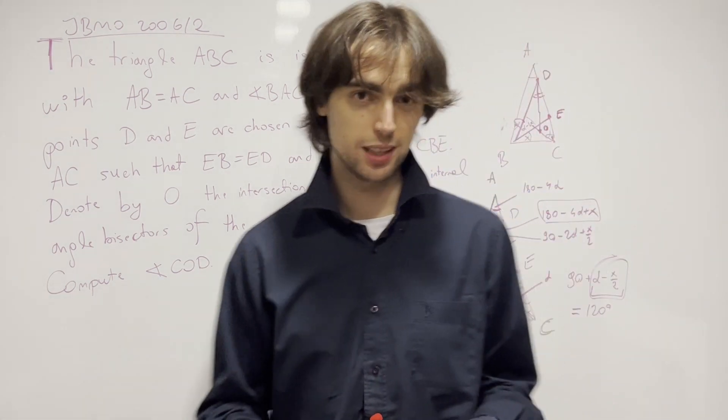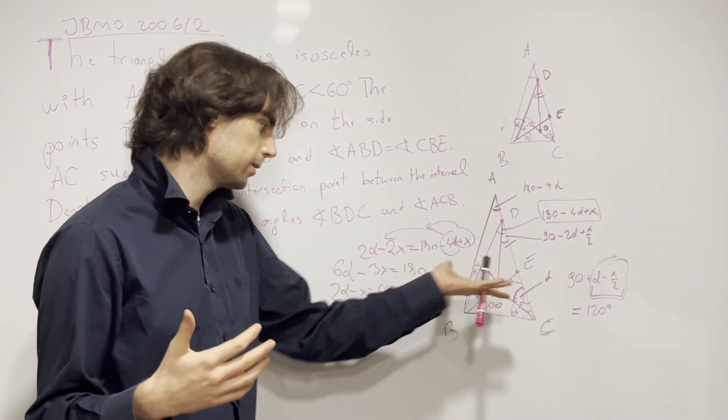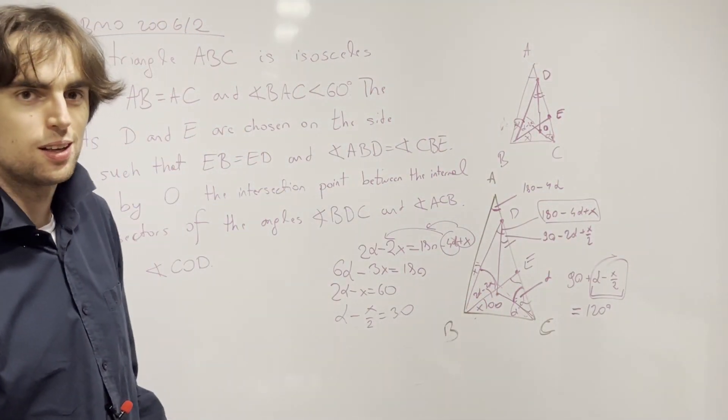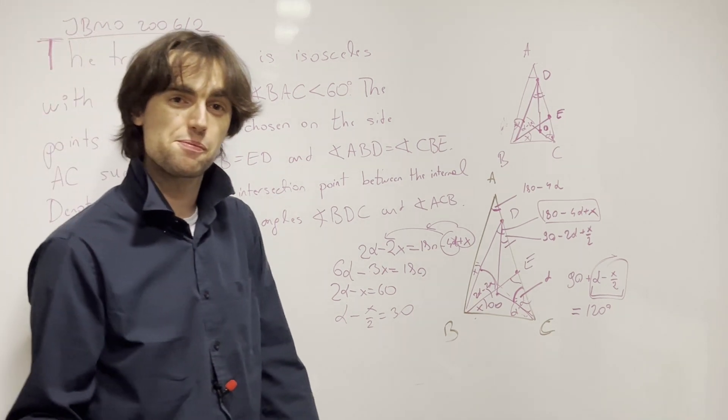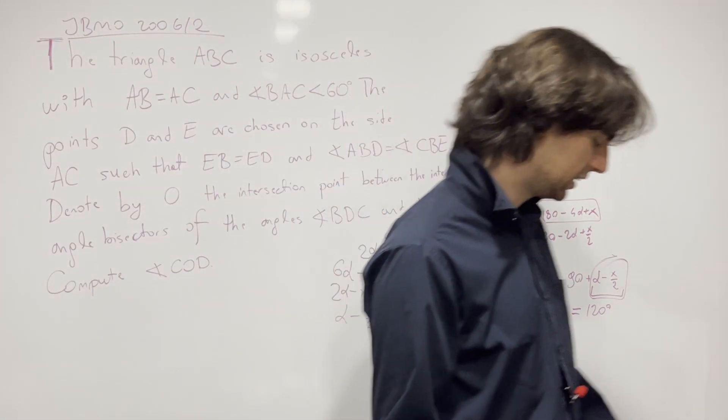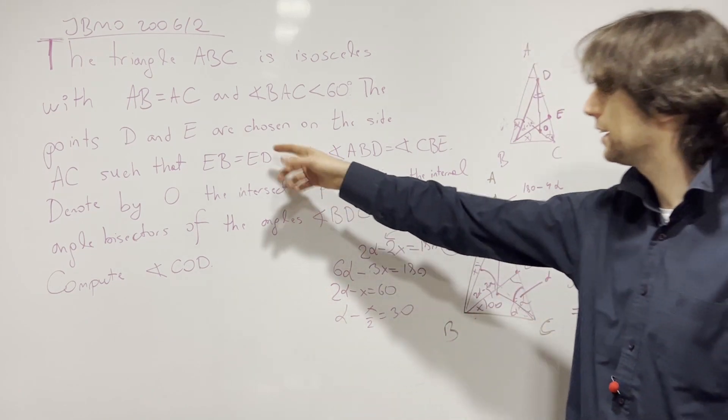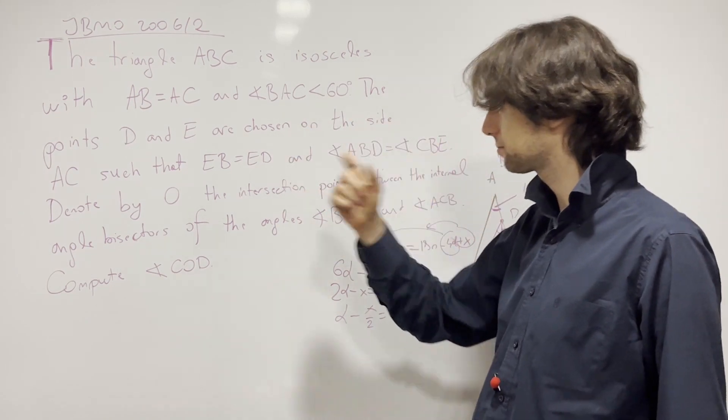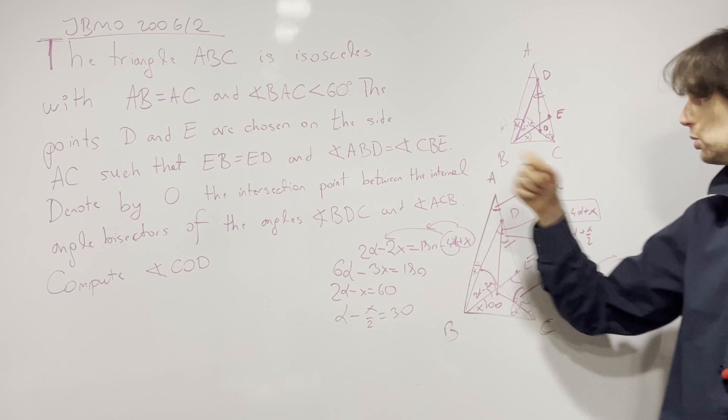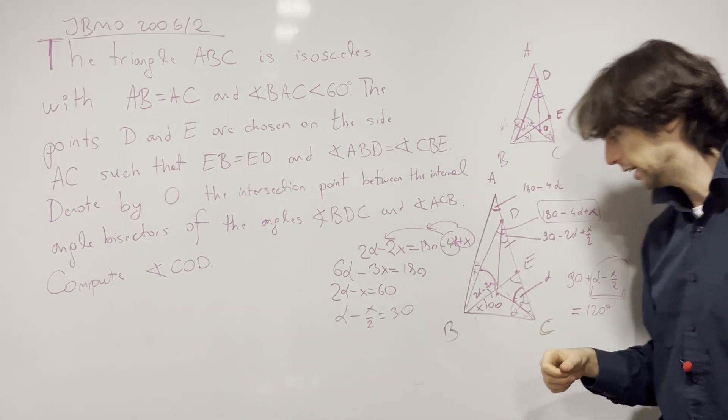And so we are done, right? I imagine pause for 5 minutes and figure out if we're done. And the answer is no, we're not. Because, mind you, what did the problem say? E and D are on the side AC such that this holds true and this holds true.